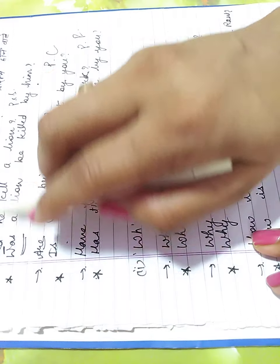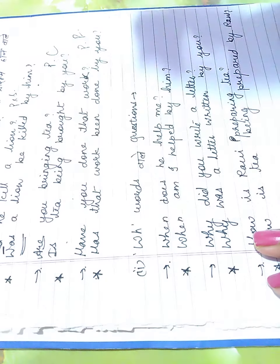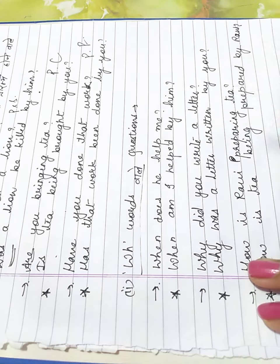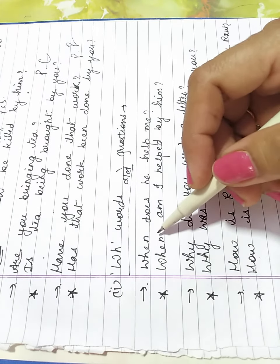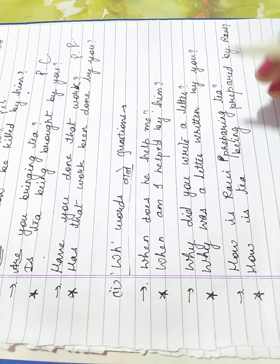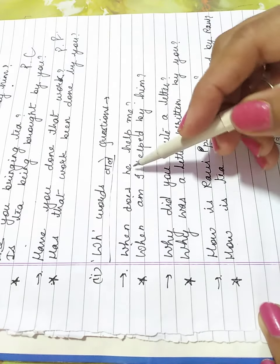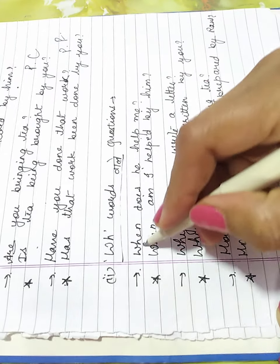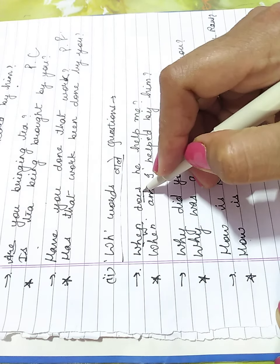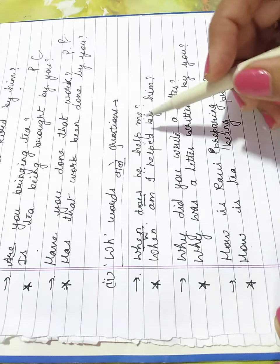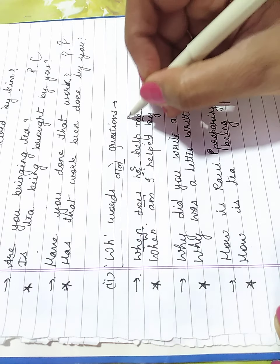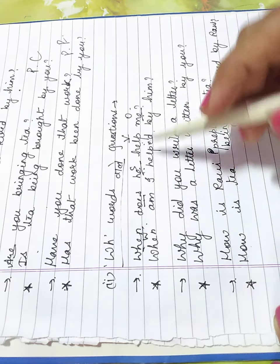Now, this is one type, helping verb or auxiliary. Second is WH word: when, why, where, how. When does he help me? When WH word is used, helping verb, subject, object, this is verb.